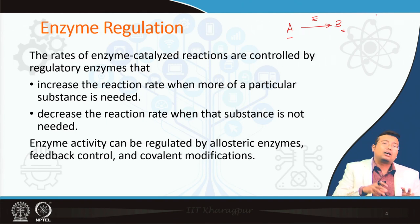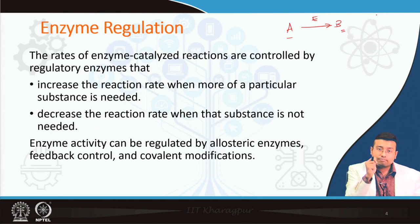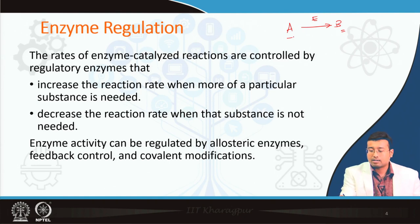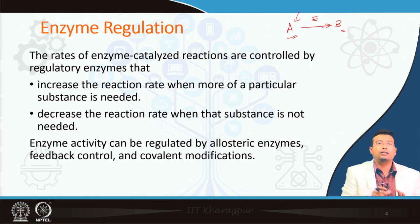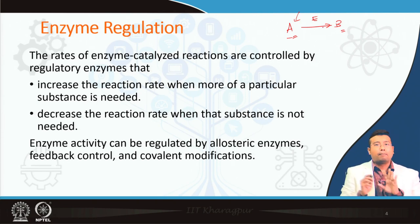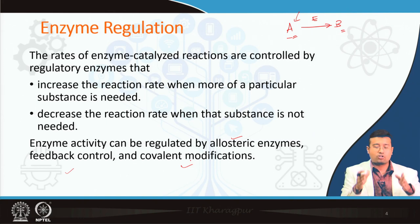When a lot of A has been converted to B and my body does not need B anymore, E will be signaled by various mechanisms that we do not need more B. The activity of E will be altered so that the action of E on A will be inhibited. When we need more B the enzyme reaction rate will be high; when we do not need B the rate will be controlled. This phenomenon is known as regulation, and it can be regulated by multiple means: allosteric, feedback, and covalent modification.